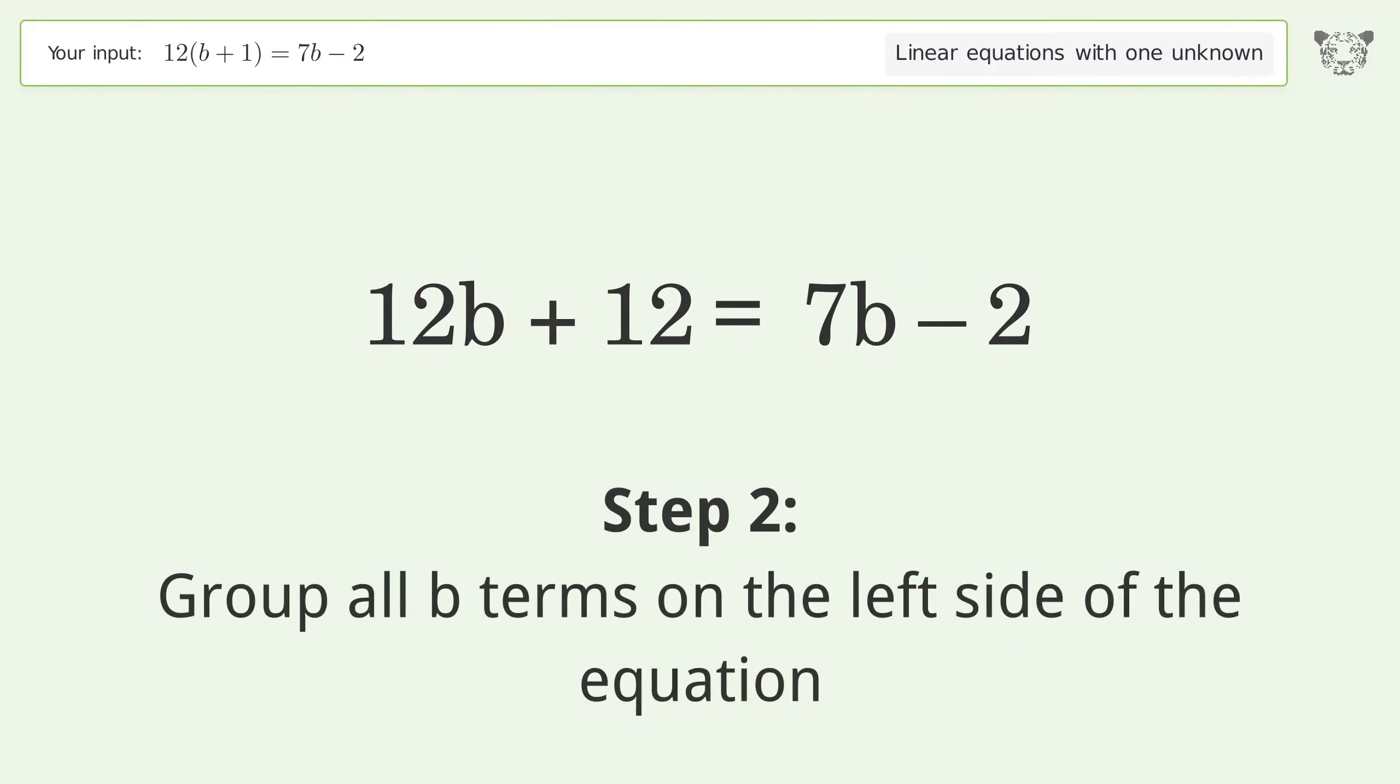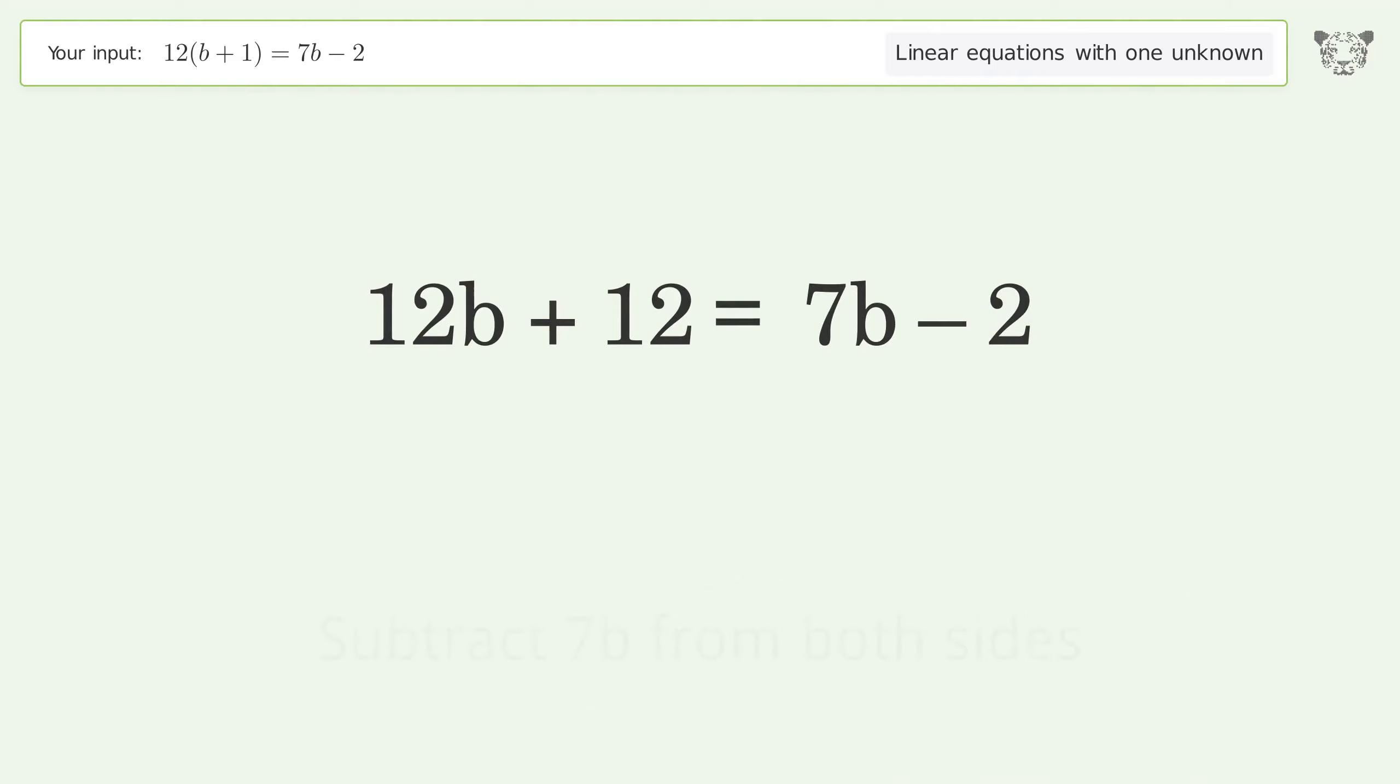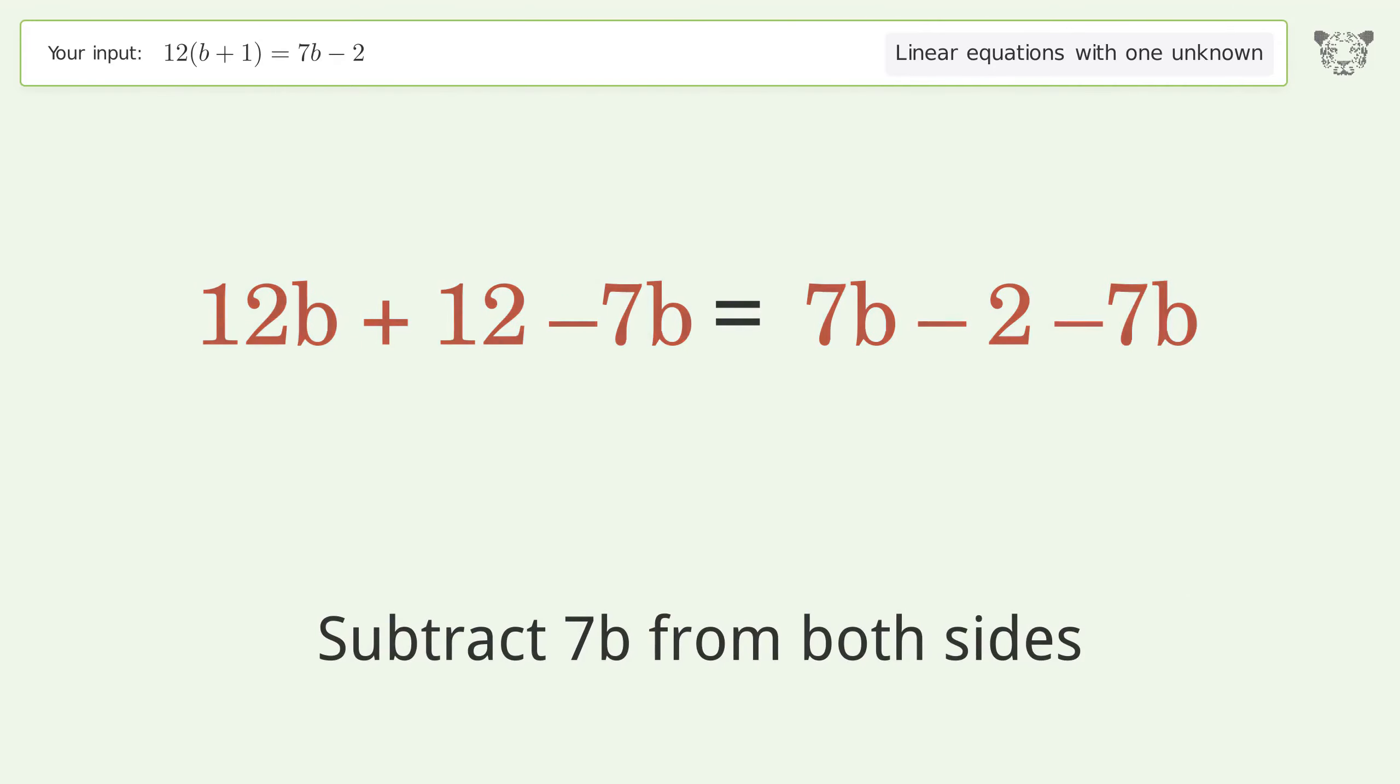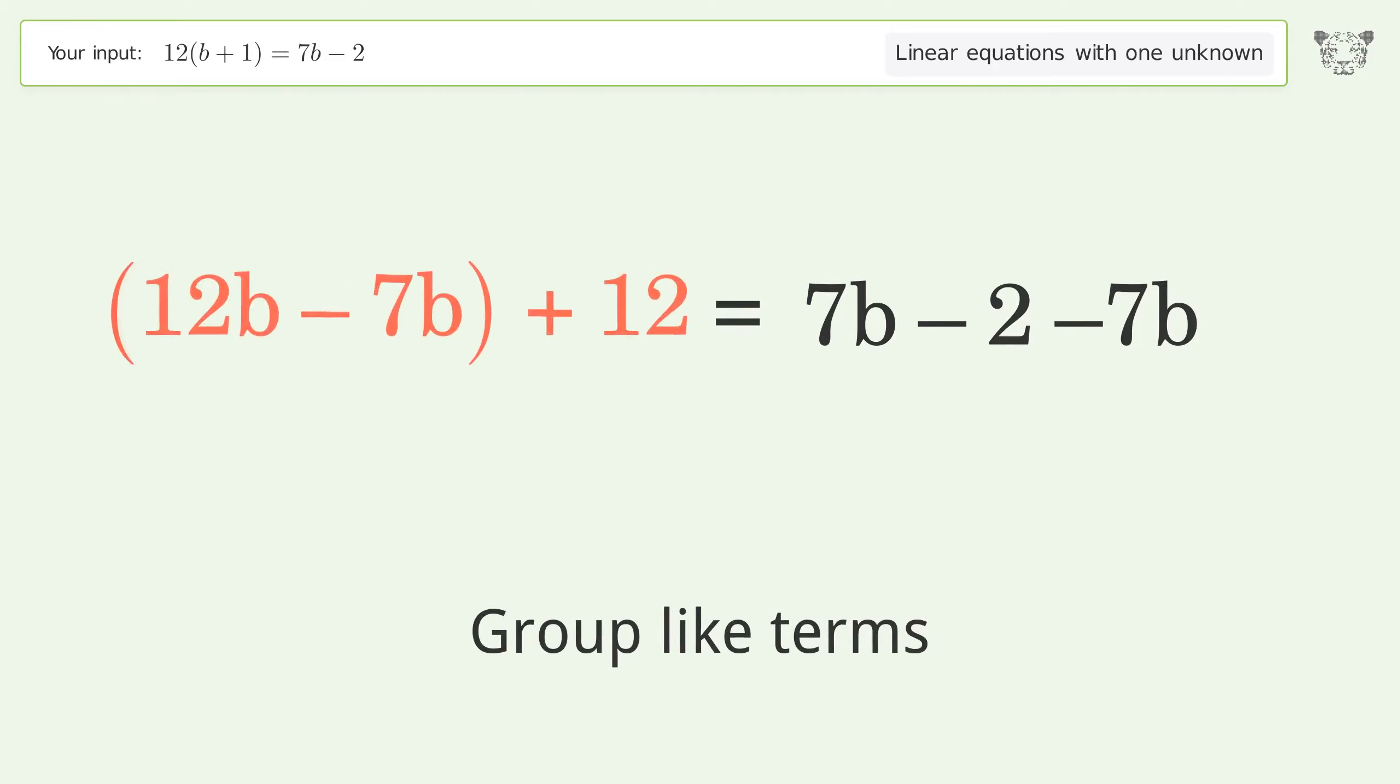Group all b terms on the left side of the equation. Subtract 7b from both sides. Group like terms. Simplify the arithmetic.